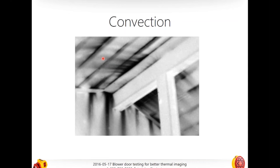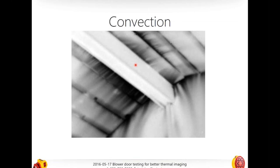Here we can see another more profound line — tongue and groove wood slat ceiling. You can see the lines on the sidewall as well, with actual cracks moving through. This would not have been obvious had we not run the blower door. You can also see some seriously exaggerated lines in one area compared to another, indicating really heavy leakage there.